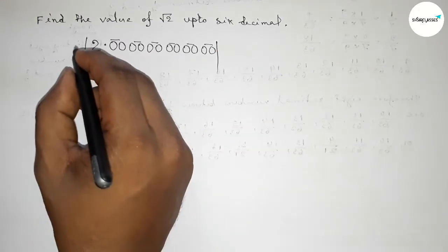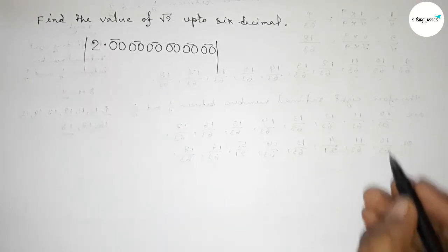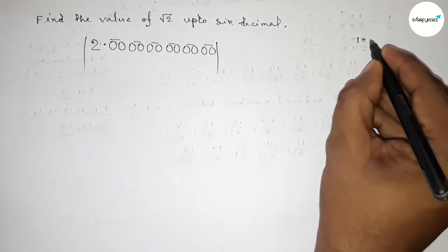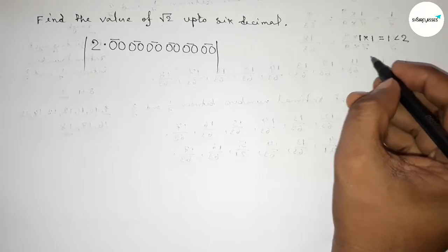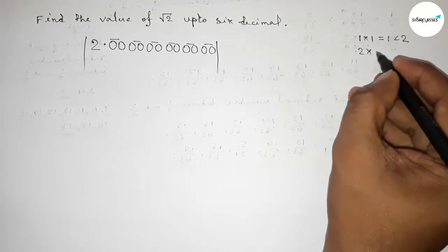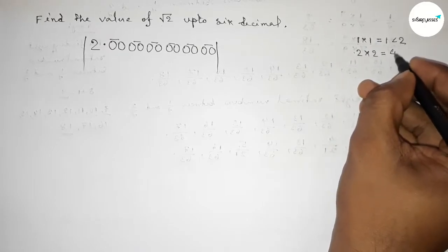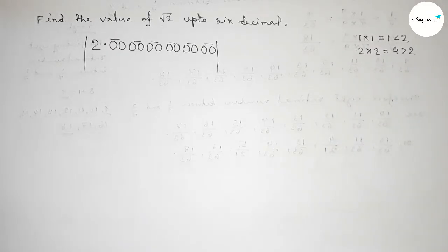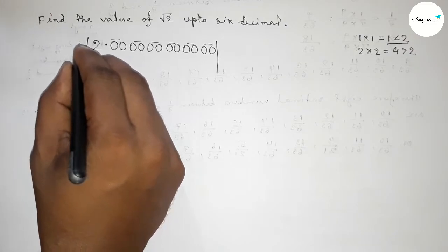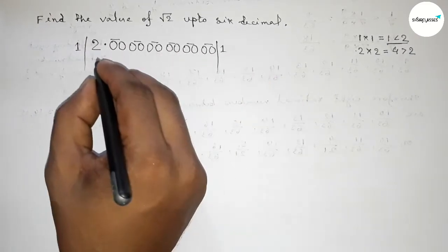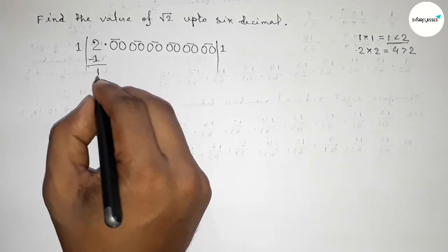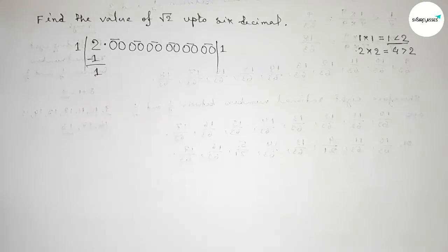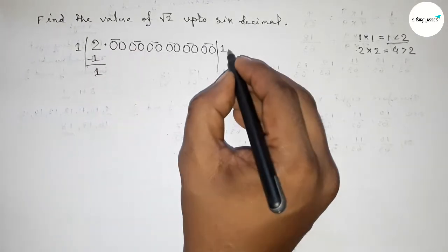Now we have to take a number and multiply it by itself. If you take 1 and multiply by 1, this is 1 — 1 times 1 equals 1, which is less than 2. If you take 2 and multiply by 2, this is 4, which is greater than 2. So we take 1, since it is less than and almost near to 2. So 1 times 1 equals 1. Subtracting: 2 minus 1 equals 1. Write a decimal point here.